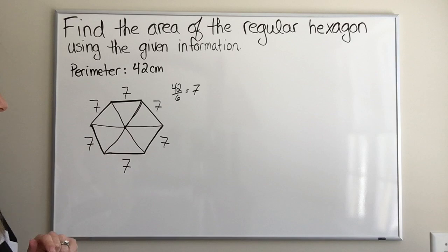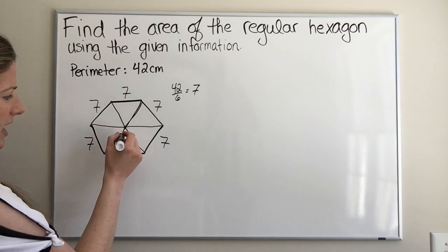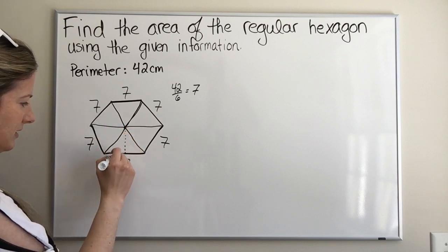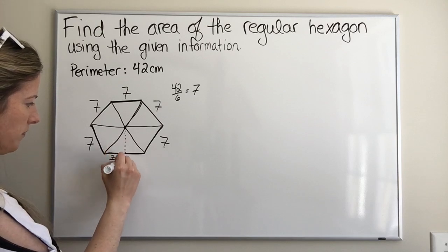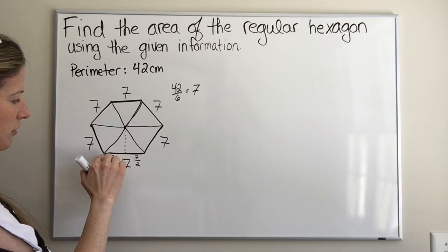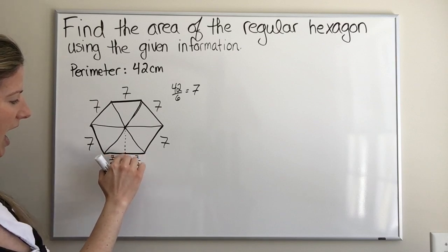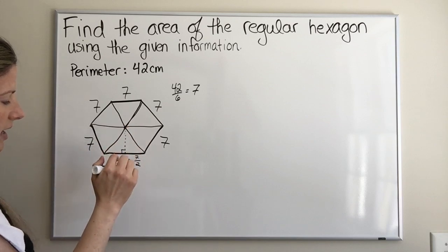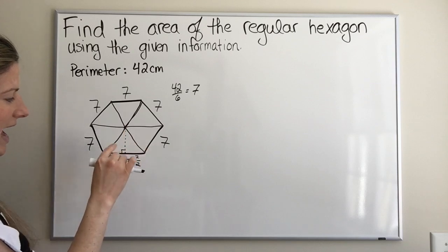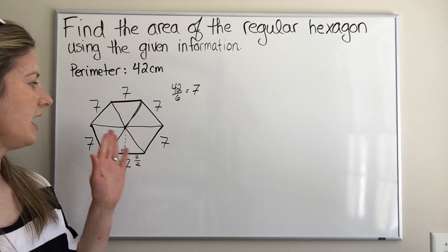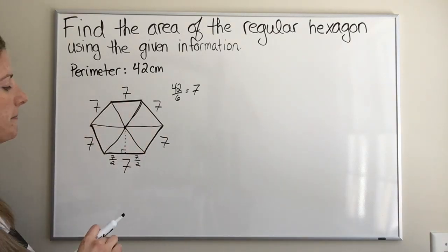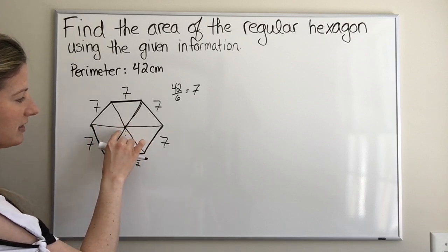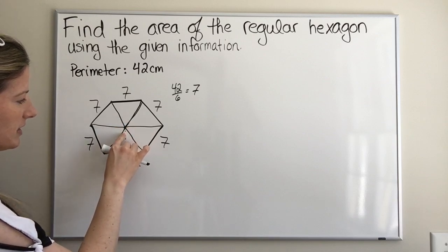I'm going to talk about this one triangle because it's the easiest one. If we drop an altitude here, it's going to bisect this side. So each half will be seven over two. I know the whole side is seven, and I just need to find the height of this triangle because dropping an altitude hits at a right angle. If I can find the height, I'll be able to find the area.